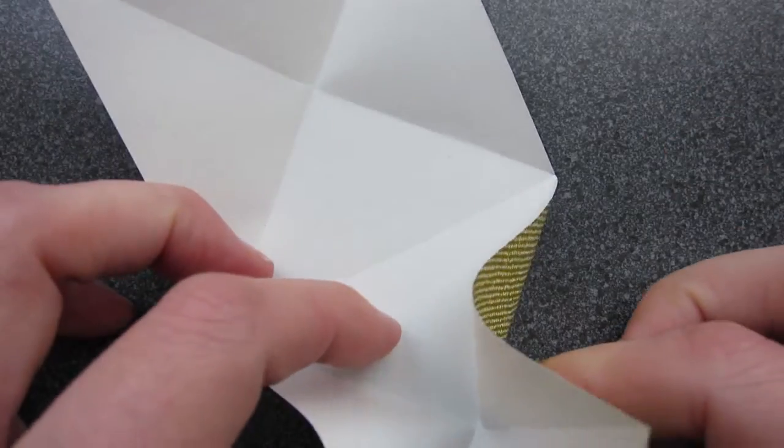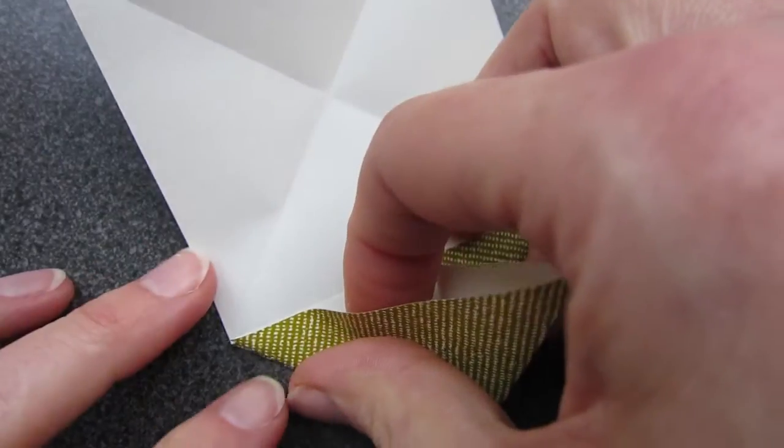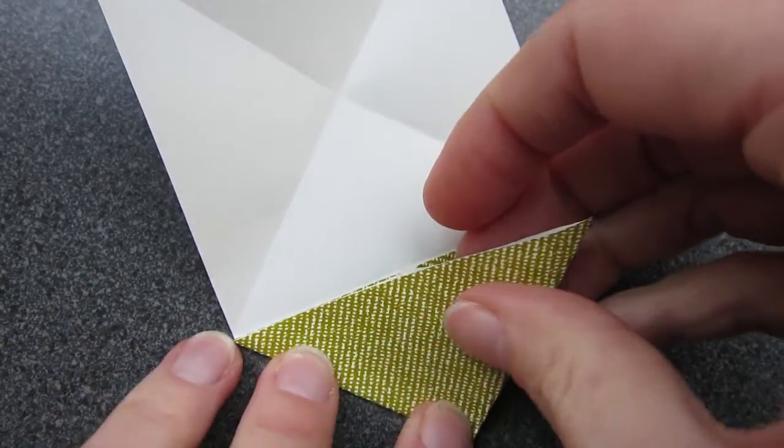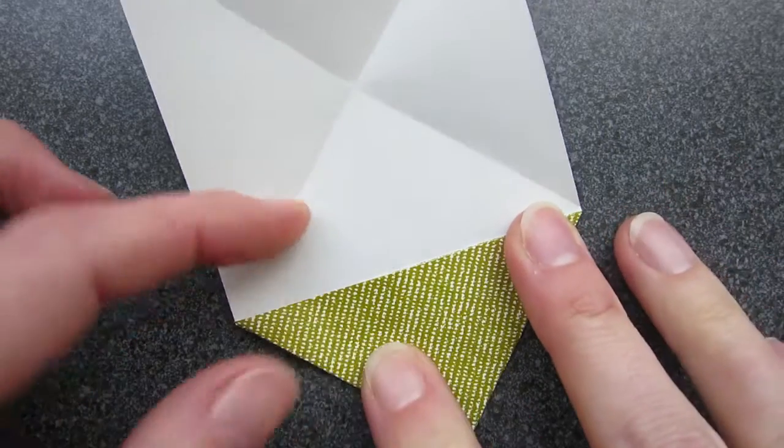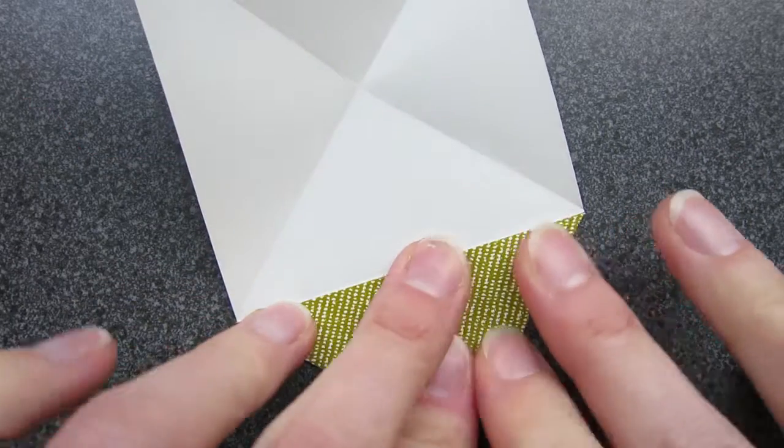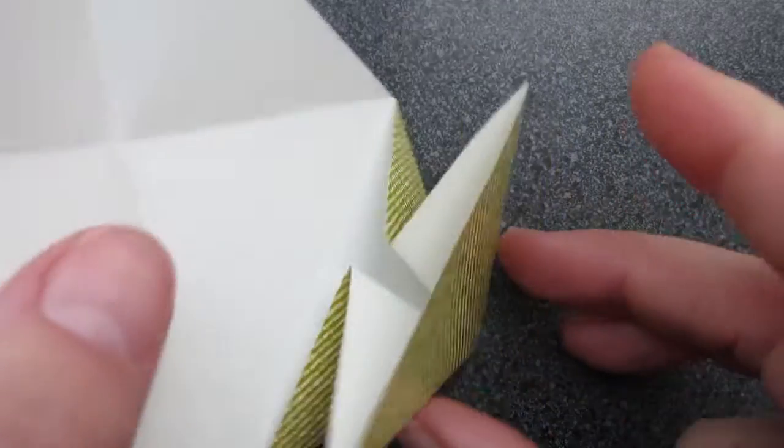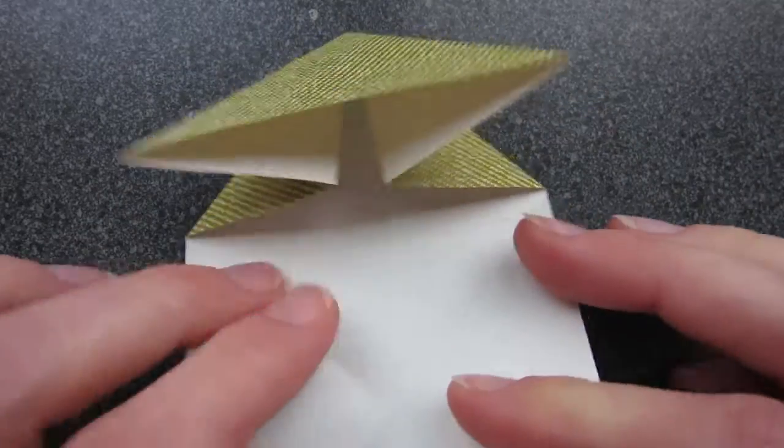Now give the paper in the middle a gentle squeeze and create a fold just like in the water bomb base. You see? Same on the other side.